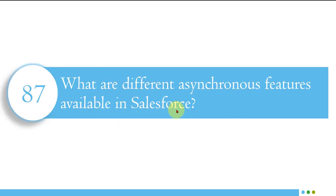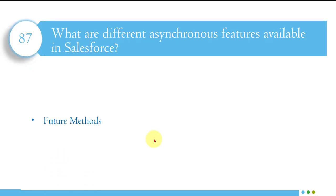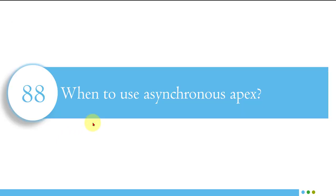The next question is: what are the different asynchronous features available in Salesforce? Asynchronous apex can be used in multiple different ways. The four options are: future methods, batch apex, scheduled apex, and queueable apex. Future methods and batch apex are the most frequently used, scheduled apex is also commonly used, and queueable apex is the least commonly seen.